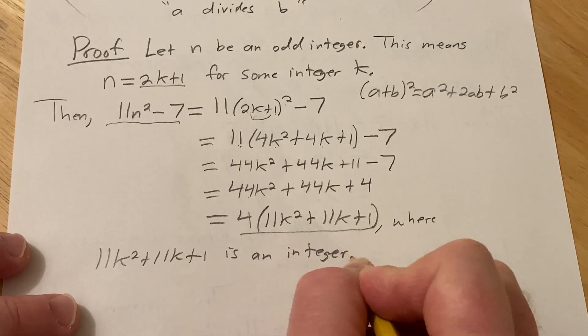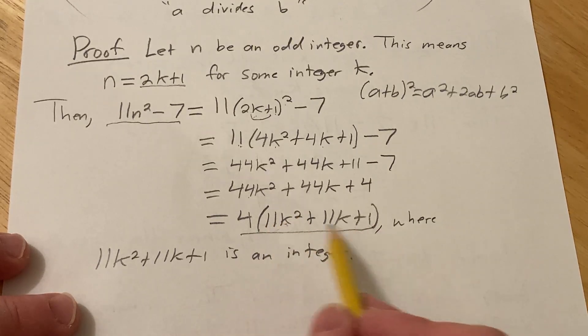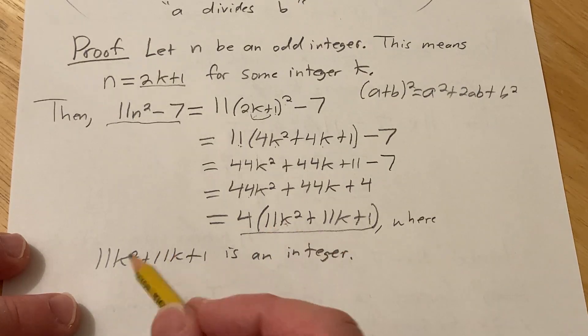And if you're wondering why it's an integer, it's because k is an integer. And then an integer times an integer is an integer. And then if you add up integers, you get integers. So that's going to be an integer.